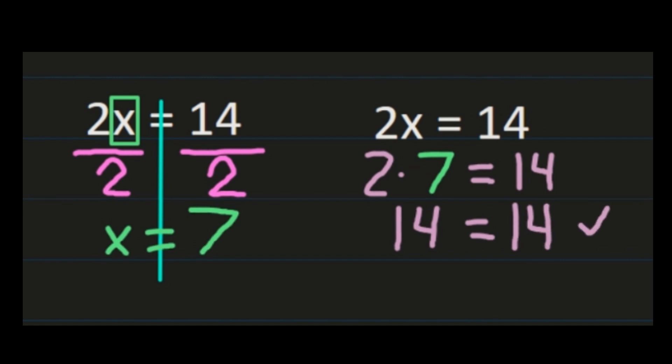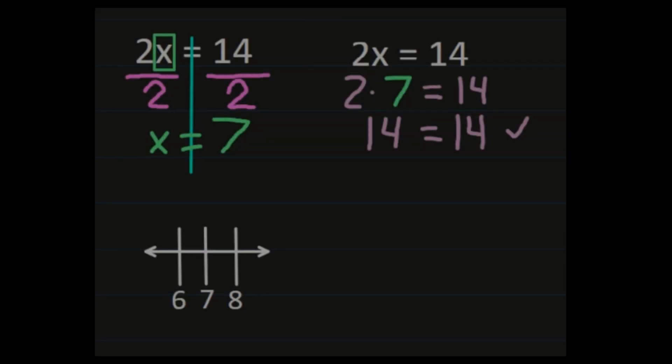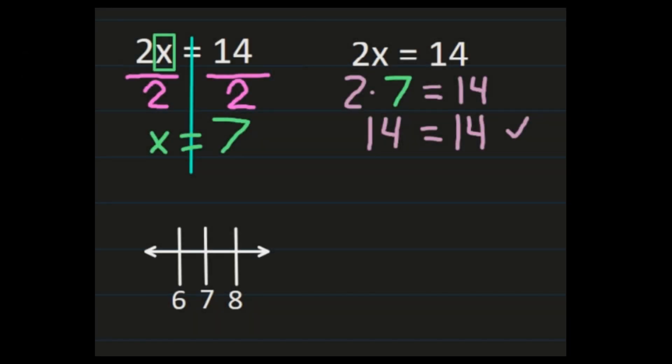We can also graph the answer. We got x equals 7, so if you're going to graph it, it's simply a closed circle on the 7.